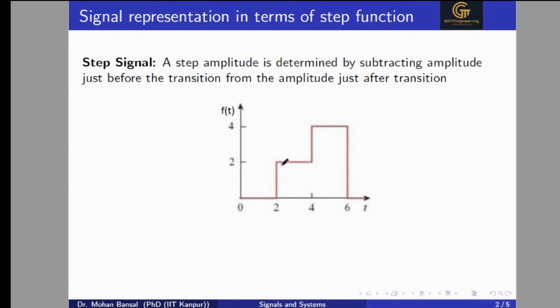Let's say we have given a signal with some steps and we want to represent this signal in terms of the step function. For that, we need to find out how many transitions or discontinuities are there. One discontinuity is at t equal to 2, another at t equal to 4, and the third transition at t equal to 6.